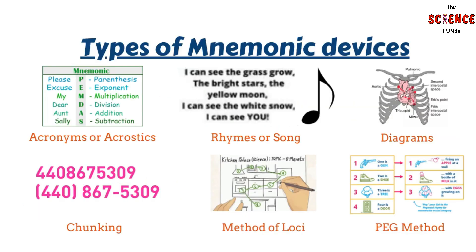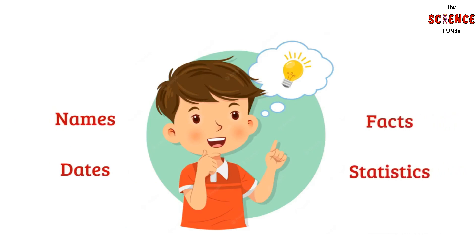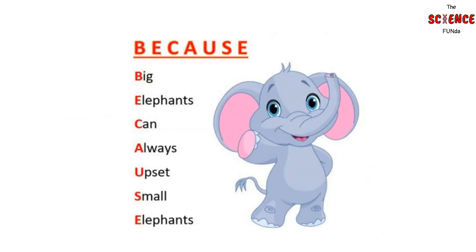It can take the shape of acronyms, a song, or a silly yet memorable statement where each word's first letter stands in for a different concept. Mnemonic devices can help someone remember names, dates, facts, statistics, and more by using rhymes, acronyms, diagrams, or other strategies. Another way people utilize mnemonics is by converting a collection of words into a memorable phrase or an image in our minds.